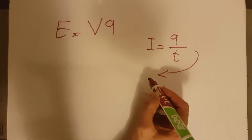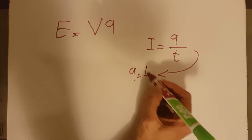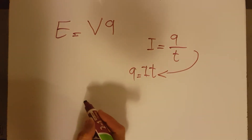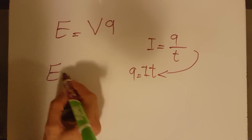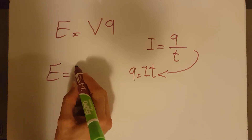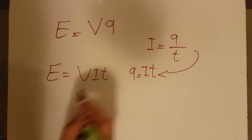This gives us Q equals I times T, and therefore E equals V times I times T.